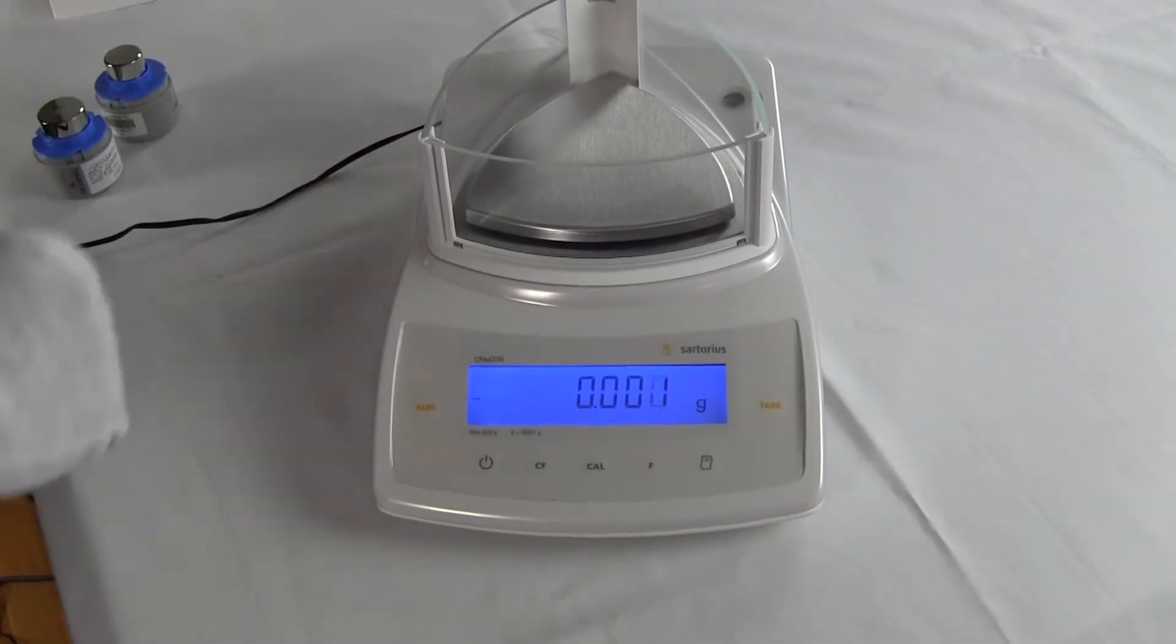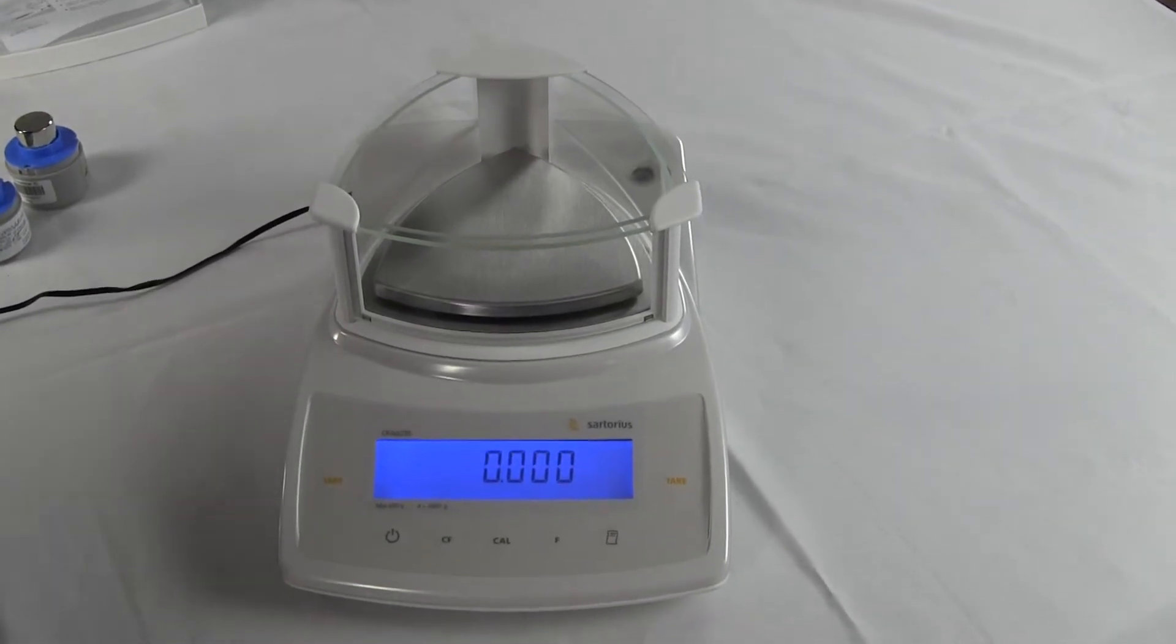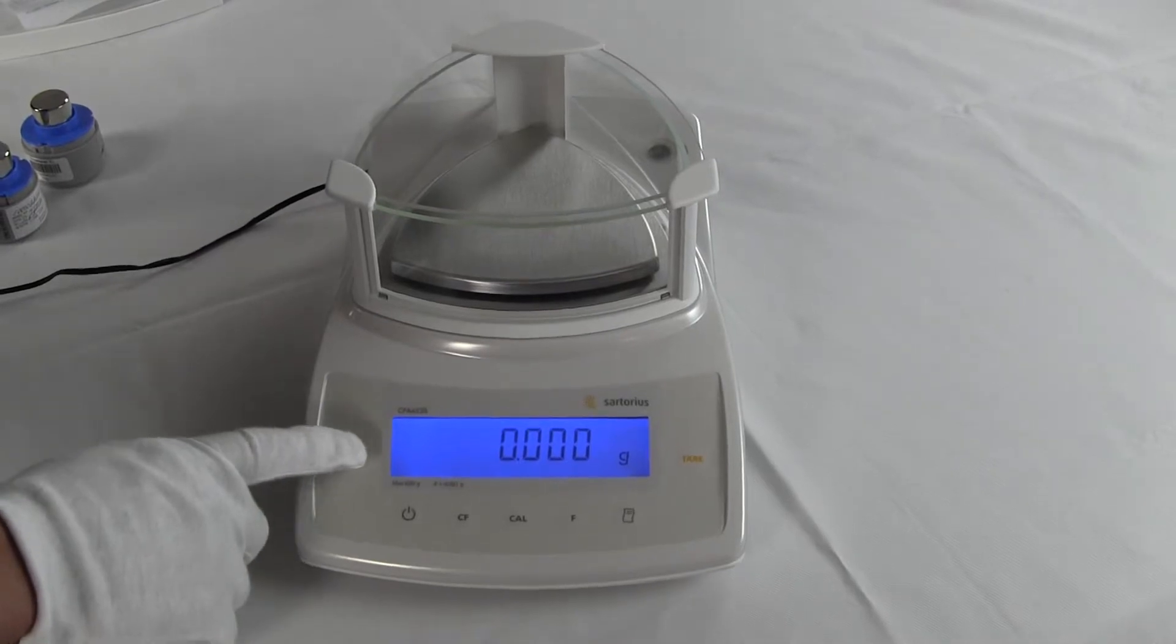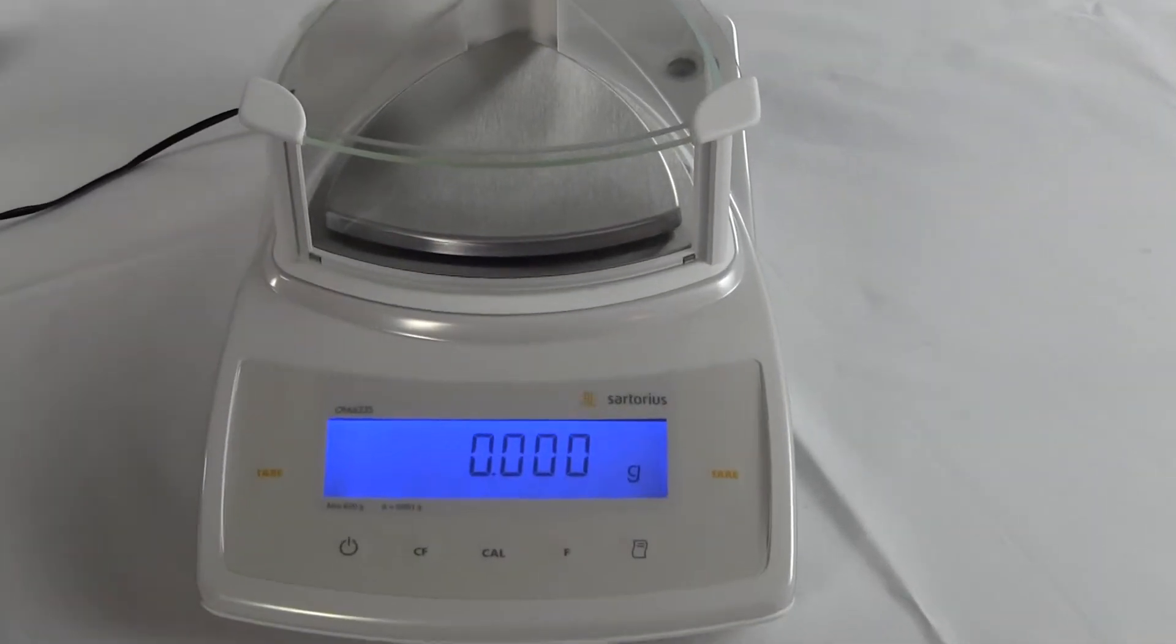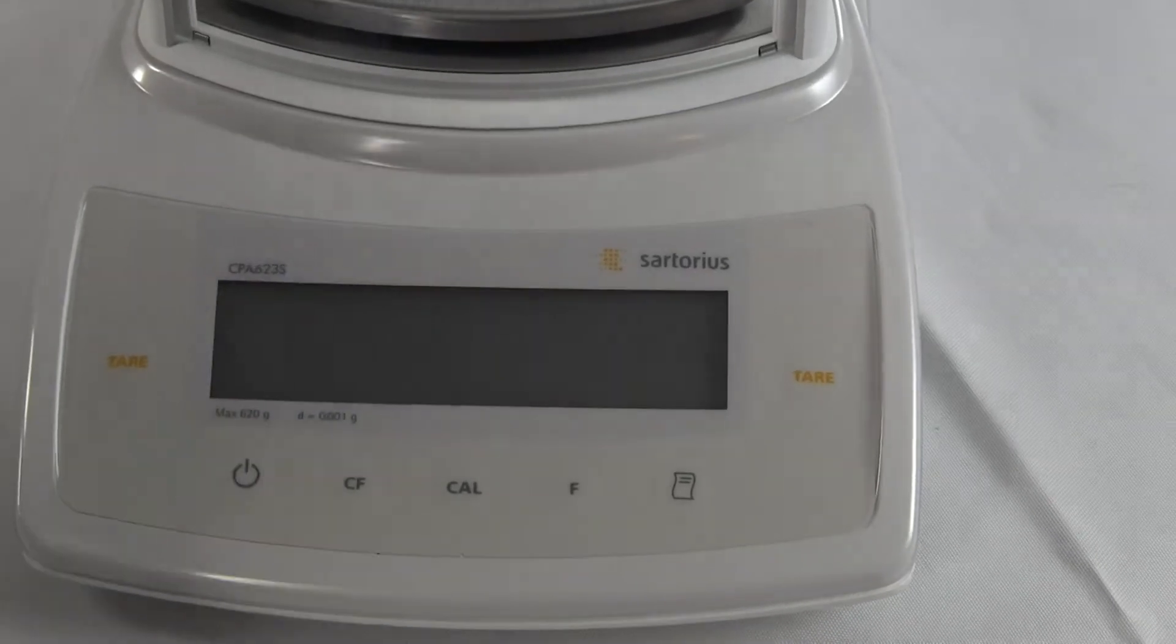I want to go over a few more of the features on this balance. You'll notice the balance has a backlight display. This is adjustable in the menu. We have two tare keys on the right and the left for simple operation. The button here all the way on the left-hand side, this is the power button.